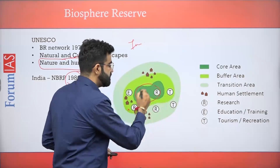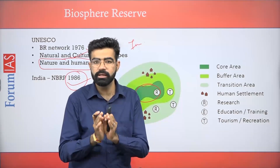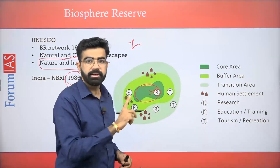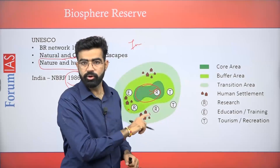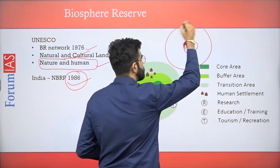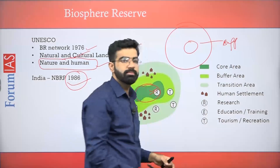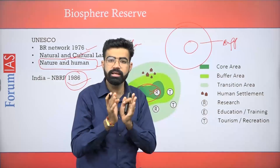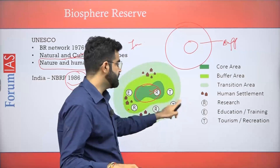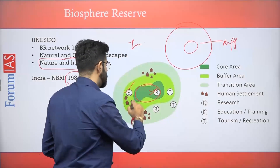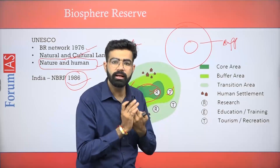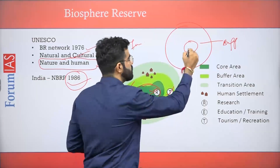Biosphere reserve में तीन area होते हैं। सबसे center में होता है core area — core area में सारा species conservation होगा। यहाँ पे कोई बसावट नहीं होगा, residence नहीं होगा। Accept research purpose, you cannot enter into this area। Core area के बाद होता है buffer area। Buffer area का काम है core area पर pressure कम करना। Buffer area में education, tourism, और research — all the things are allowed। Buffer area shock absorber का काम करता है।